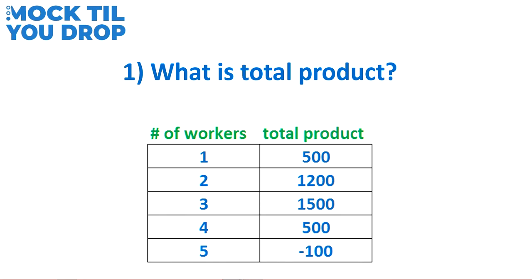Now if you look at the bottom part of this chart it doesn't make any sense if you really think about it — how can five workers produce negative 100 baskets? Well, I actually use this chart in one of our mock exam questions on our website as it pertains to the third question in this video, so later on I'll explain why I designed the chart this way.